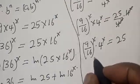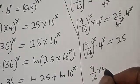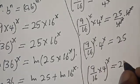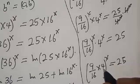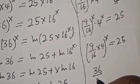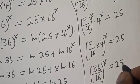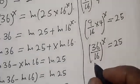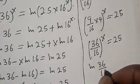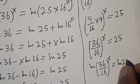So we have (9 over 16) raised to power s multiplied by 4 raised to power s is equal to 25. Now they have the same power, so this becomes (9 over 16 times 4) all raised to power s is equal to 25. Then 9 times 4 is 36, so we have (36 over 16) all raised to power s is equal to 25. Now let's take the natural log of both sides: natural log of (36 over 16) all raised to power s is equal to natural log of 25.